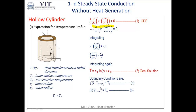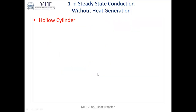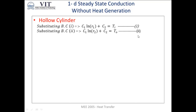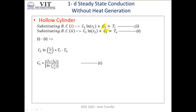To find the temperature profile, we apply boundary conditions: at inner radius R1, temperature is Ti, and at outer radius R2, temperature is T0. Applying the first boundary condition: Ti = C1 · ln(R1) + C2. Applying the second: T0 = C1 · ln(R2) + C2. Subtracting these two equations, C2 cancels and we get Ti − T0 = C1 · ln(R1/R2). Therefore, C1 = (Ti − T0) / ln(R1/R2).